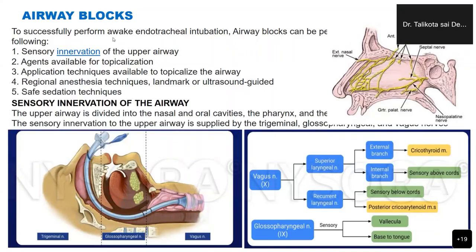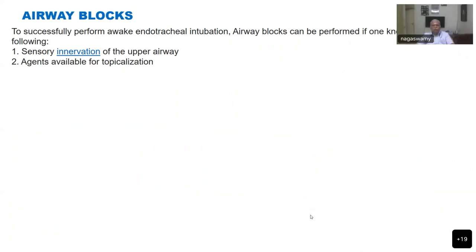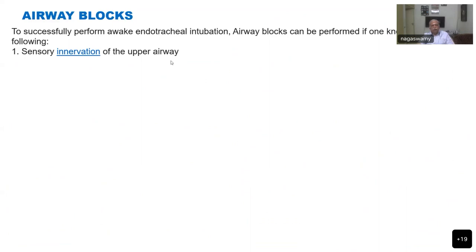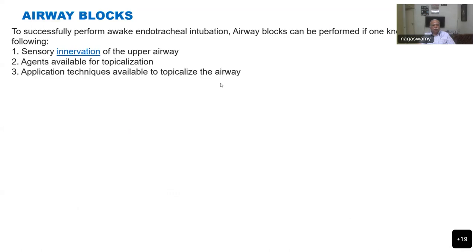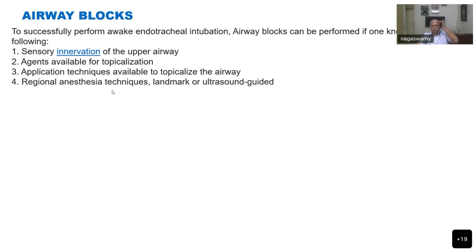We perform awake intubation, and airway blocks can be done — that is the main reason for that. First, you must know the sensory innervation of the upper airway. Then you need to know the agents you will use for topicalization or blocking those sensory nerves, the application techniques available, and the regional anesthesia techniques. Topicalization means you just apply them on the surface of the mucous membranes.